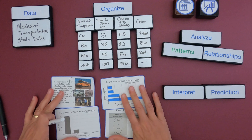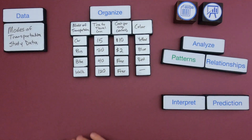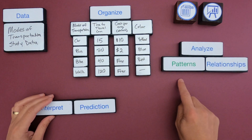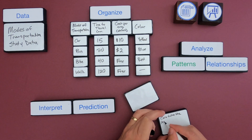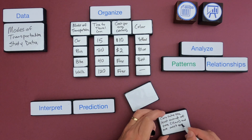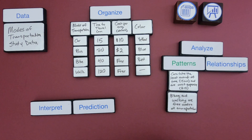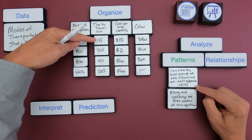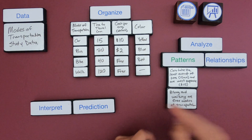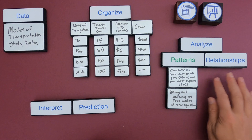Now I've taken all of this data and organized it onto one chart, so I can start to see the relationships. I'm starting to look for patterns — what are the patterns I notice? Two patterns: number one, cars take the least amount of time at 15 minutes but are also the most expensive. Also, there are two free modes of transportation: biking and walking, at least per trip.